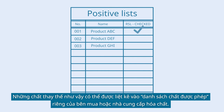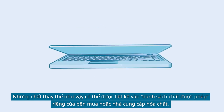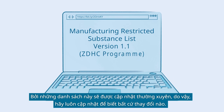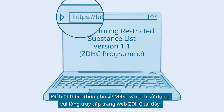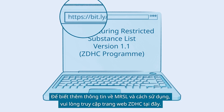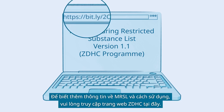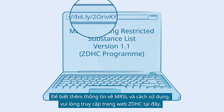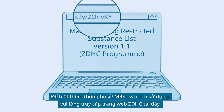Such substitutes may be listed on separate positive lists provided by buyers or chemical suppliers. Since these lists are updated regularly, make sure to stay up to date about any changes. For more information on MRSL and how to use these, visit the ZDHC website here.